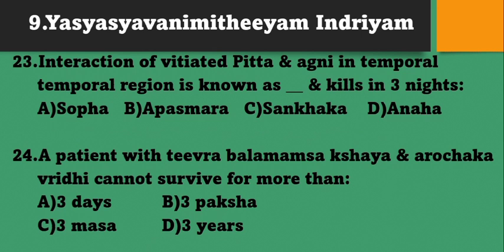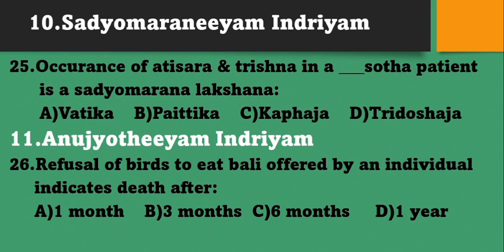Interaction of vitiated Pitta and Agni in the temporal region is known as what and kills in 3 nights? Options: Shobha, Apasmara, Shangaga, Anaha. It is Shangaga. Option C. A patient with Tivra Bela Mamsa Kshaya and Arochaka Vridhi cannot survive for more than 3 days, 3 paksha, 3 masa, or 3 years? Cannot survive more than 3 paksha. Option B. Occurrence of Atisara and Trishna in a Vatika Shotha patient is a Sadyomarana Lakshana. Option A.